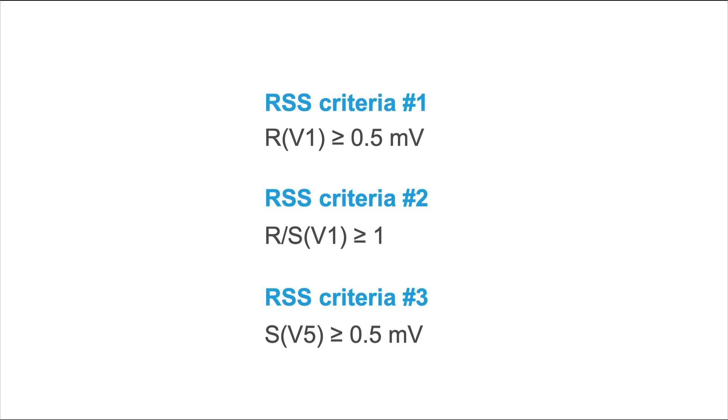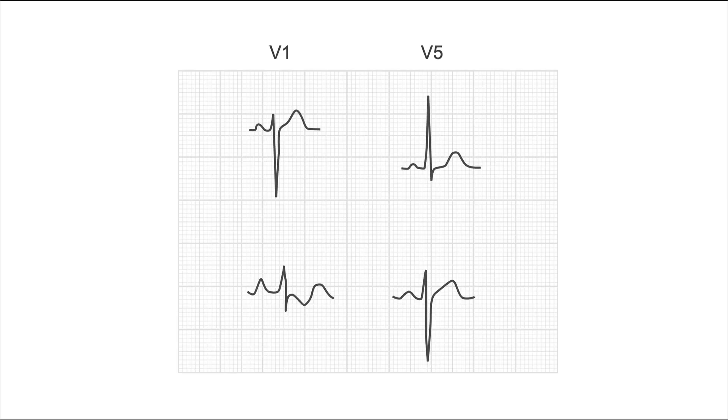With each positive RSS criteria, the likelihood of right ventricular hypertrophy increases. Let's look at an example. On the top half of this slide, you can see two normal QRS complexes, one in V1 and one in V5. Let's assess these two QRS complexes using the RSS criteria that we've just learned.